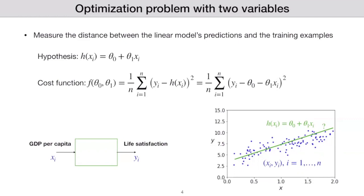The first thing we need to do is define a cost function to measure the amount of error. The y_i's are the actual values we have for life satisfaction, and h of x_i are the predicted values. So this measures the distance for each point, takes it to the power of two, and takes the average — that's why we have one over n, sum of these distances. If I plug in what the predicted value is using the equation of this line, it is theta zero plus theta one x_i, and that's why we get y_i minus theta zero minus theta one x_i. This is the function that we want to minimize.